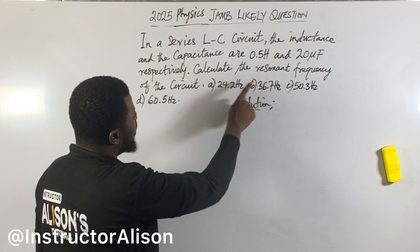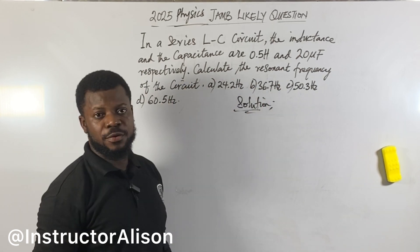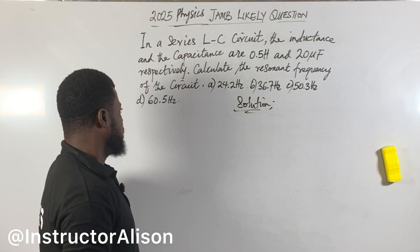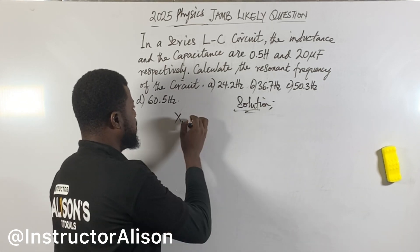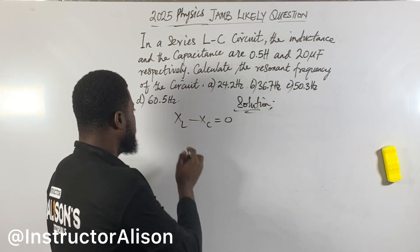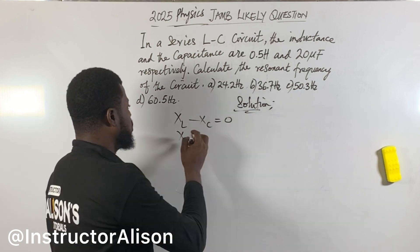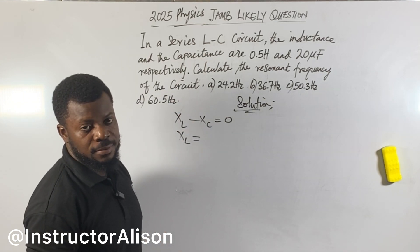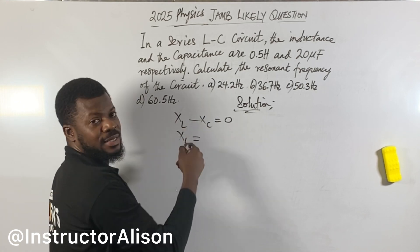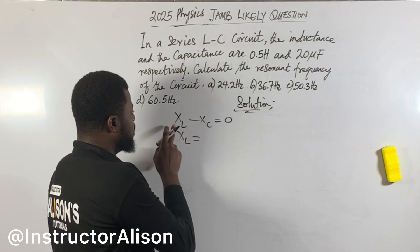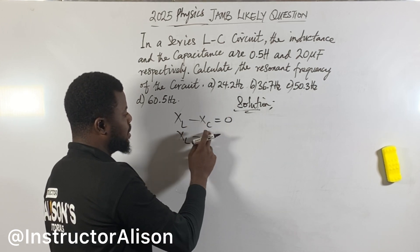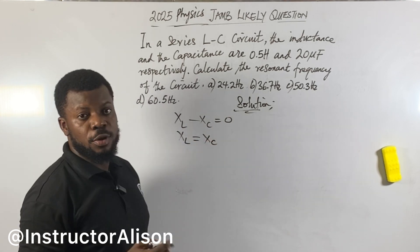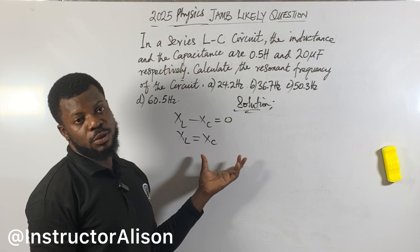So as the question says, calculate the resonant frequency. You need to recall the formula. At resonance, the inductive reactance minus the capacitive reactance is equal to zero. That means XL — the inductive reactance associated with the inductor — will be equal to XC — the capacitive reactance associated with the capacitor. So at resonance, the inductive reactance is always equal to the capacitive reactance.